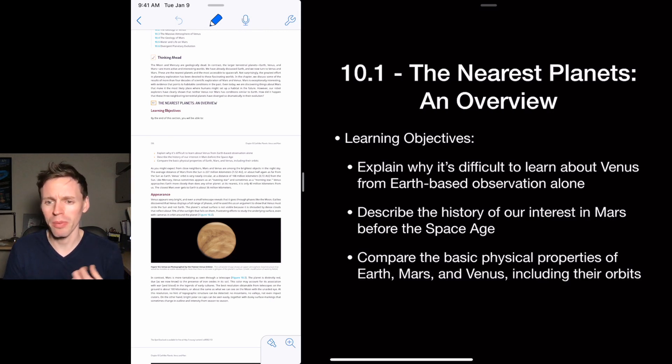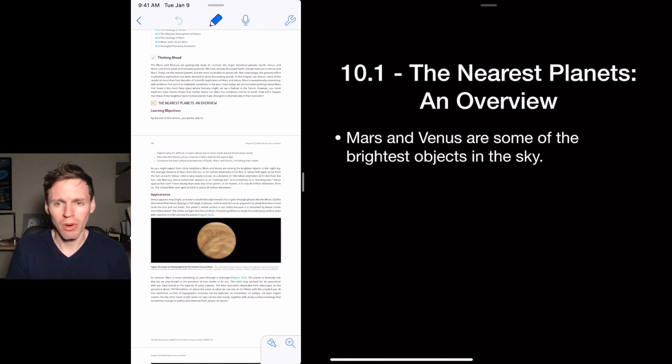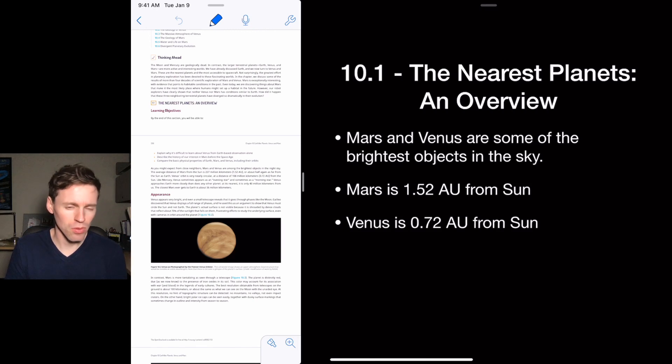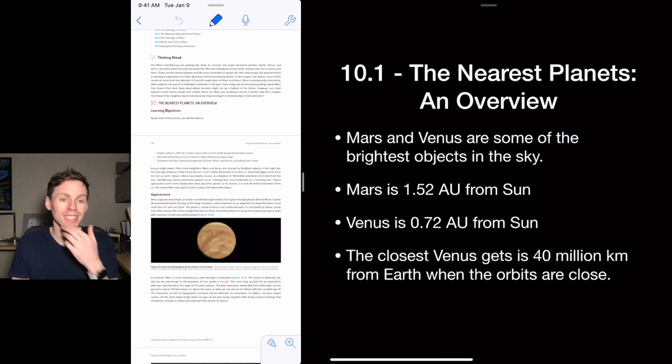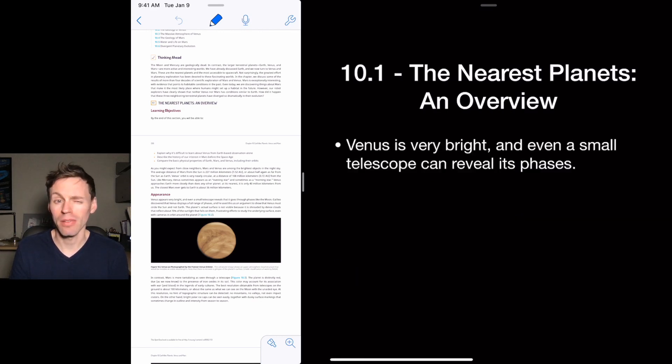And then compare the basic physical properties of these planets. So Mars and Venus are some of the brightest objects in the sky. Mars is about 1.5 AU from the Sun. Venus is about three quarters of an AU from the Sun. The closest Venus gets, though, in the orbits to Earth is pretty close, 40 million kilometers. You could probably jog that in a lifetime, maybe? No.